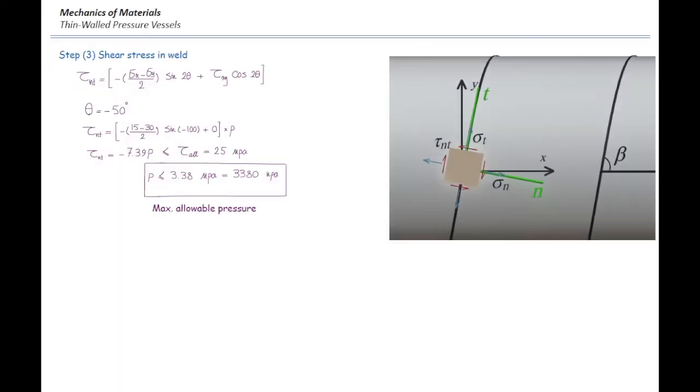The final answer is going to be the minimum of these two values. The maximum pressure that was obtained based on the normal stress on the seams was 4200 kilopascals. And the maximum pressure that is allowed if we want to make sure that the shear stress is not exceeding the allowable limit is 3380. So the overall maximum pressure in the vessel equals 3380 kilopascals.